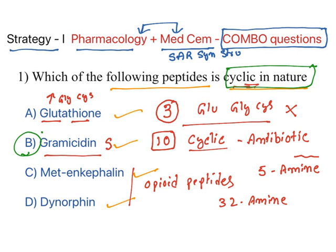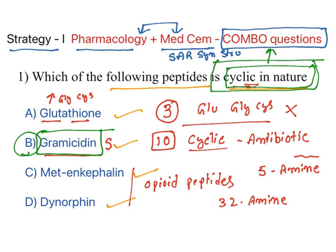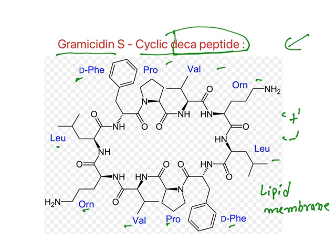Once you see gramicidin as an antibiotic, learning its mechanism of action is pharmacology, but the question was asked from the chemistry side — this is what a combo question is. When you learn structure and SAR in medicinal chemistry, you also cover adverse effects and mechanisms, which overlaps with pharmacology. Don't separate the two subjects.